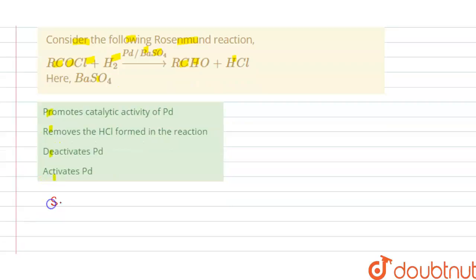We have the reaction R-C(=O)-Cl + H₂ with palladium (Pd) and BaSO₄, which gives R-CHO + HCl.